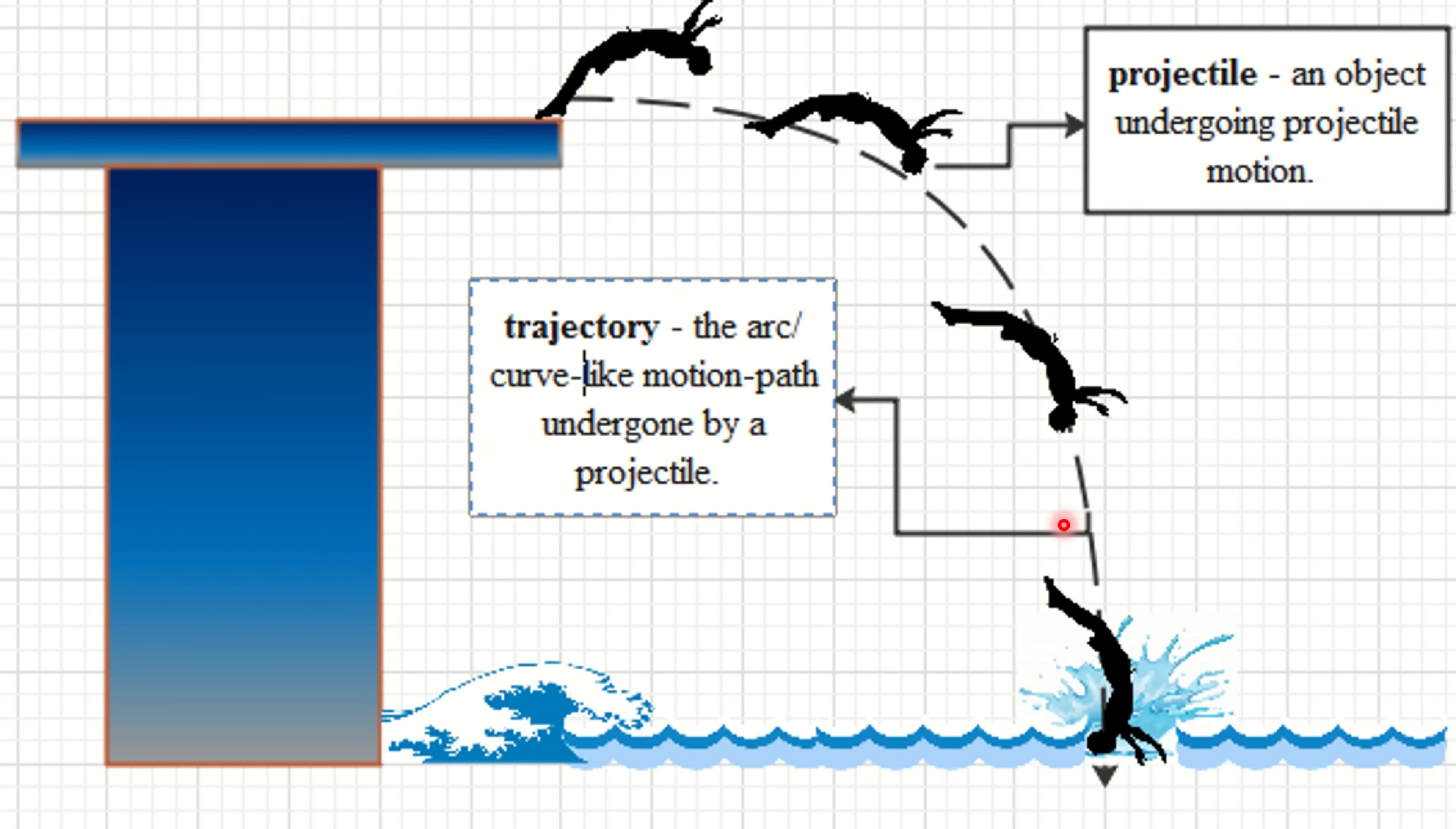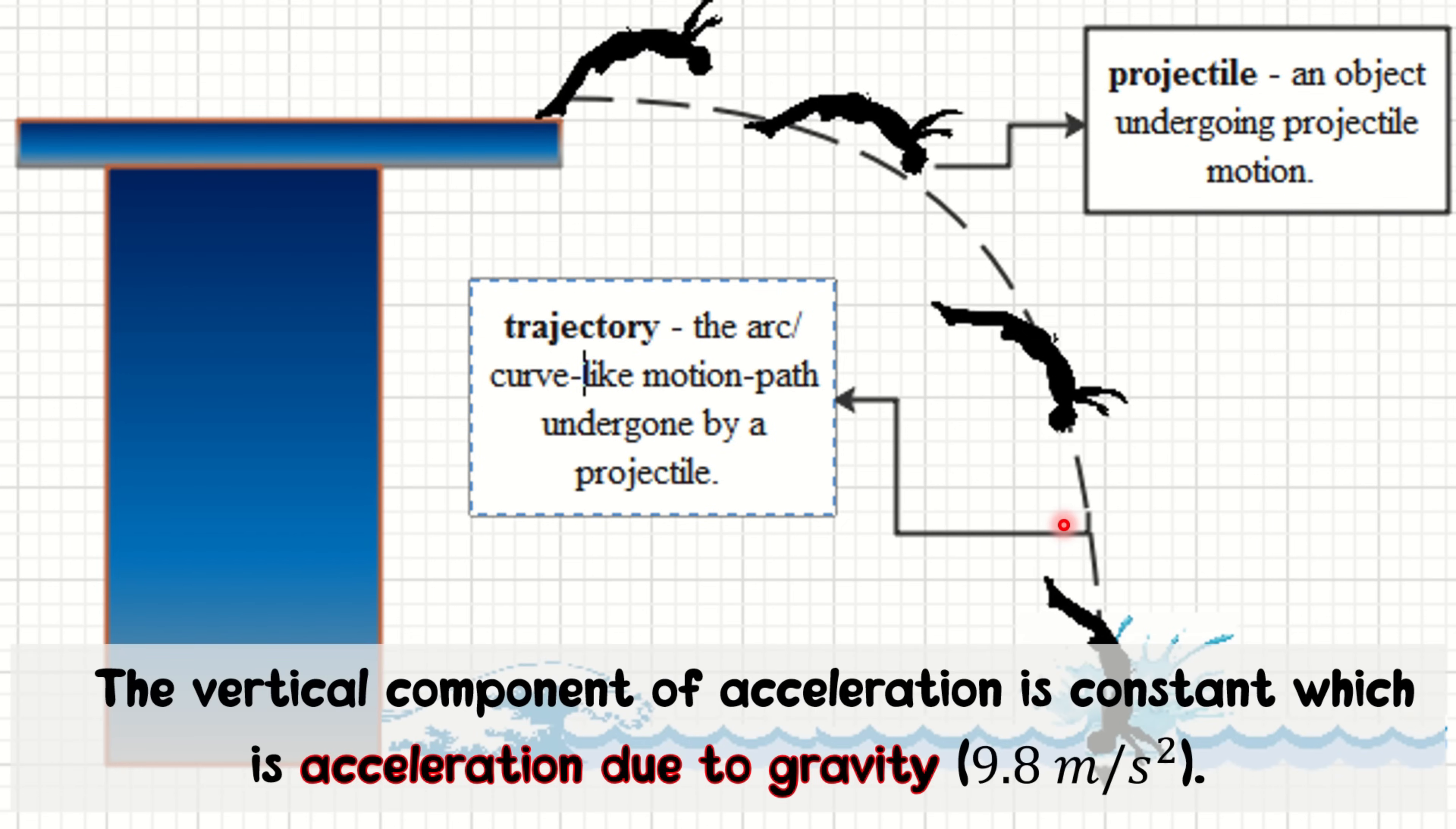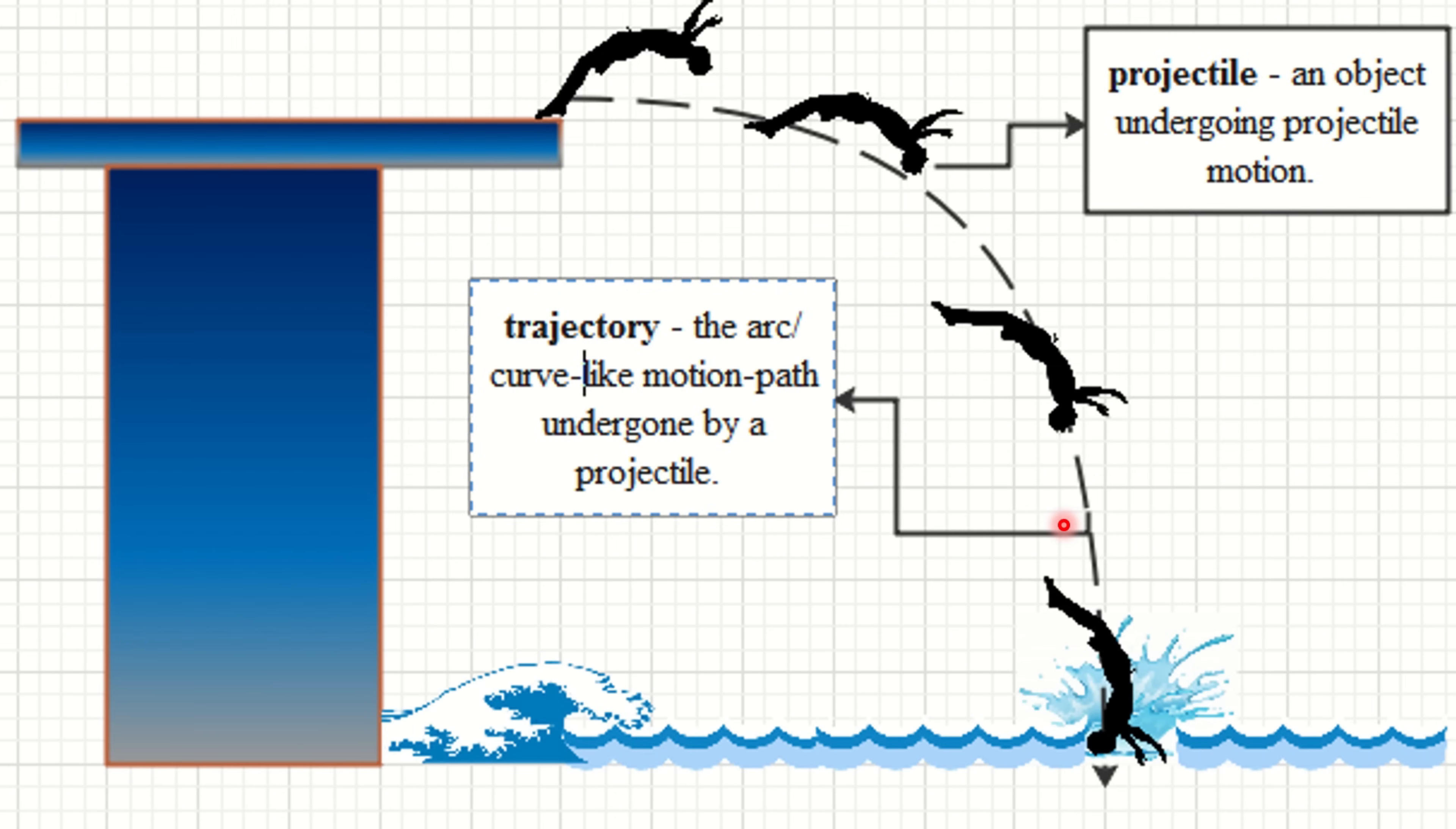On the other hand, the vertical component of acceleration is constant, which is acceleration due to gravity, and that is always equal to 9.8 meter per second squared. Therefore, projectile motion is the combination of horizontal motion with constant velocity and vertical motion with constant acceleration.